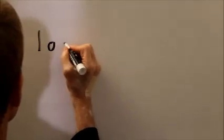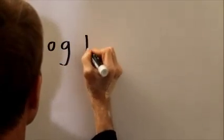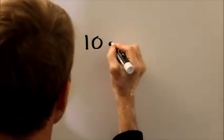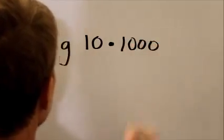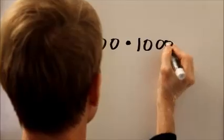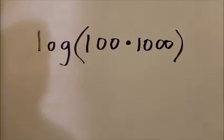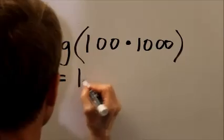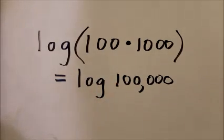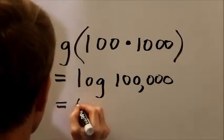That's where that rule derives from. So, for example, suppose that you have the logarithm of one hundred times one thousand. Now, the logarithm of the quantity one hundred times one thousand, that is the logarithm of one hundred thousand, and that's five because ten to the fifth equals one hundred thousand. Stick that in our little memory bank down there.